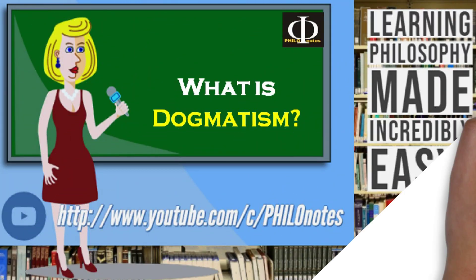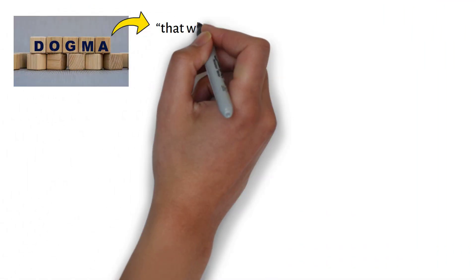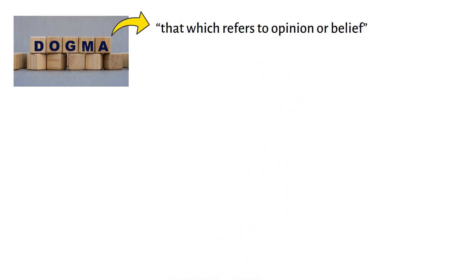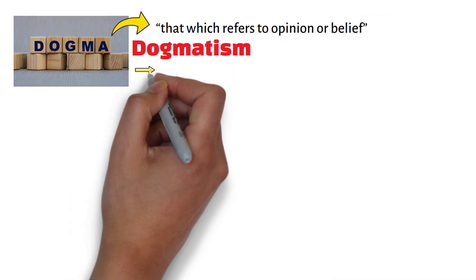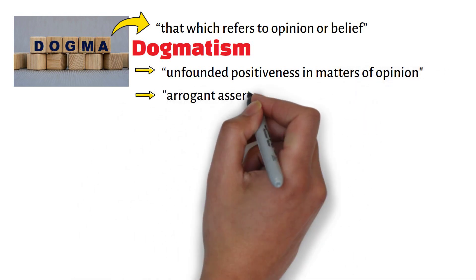What is dogmatism? From the root word dogma, which means that which refers to opinion or belief, dogmatism refers to the unfounded positiveness in matters of opinion and the arrogant assertion of opinions as truths.